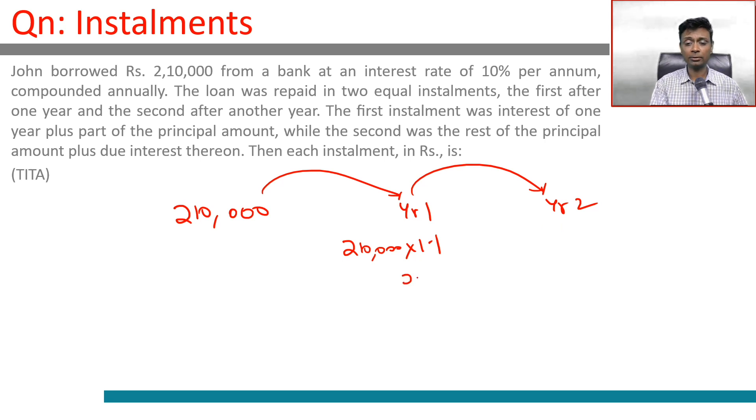But what do we do? We end up paying X. We repay X. So what is remaining is 210,000 into 1.1 minus X. Now this amount accrues in interest over the second year. At the end of year 2, we will have to repay 210,000 into 1.1 minus X into 1.1.